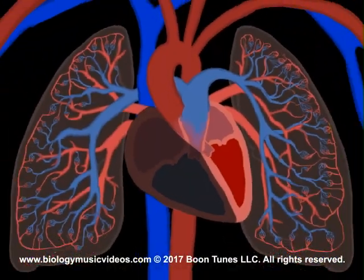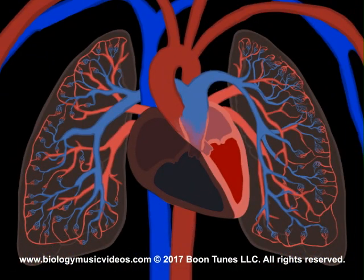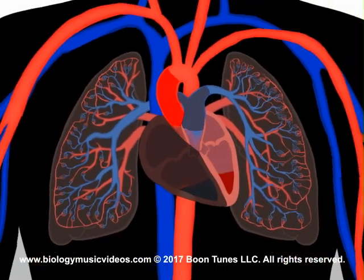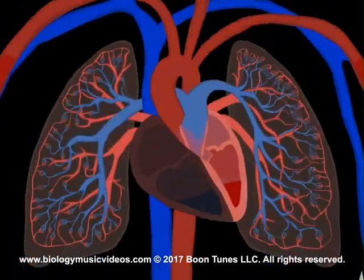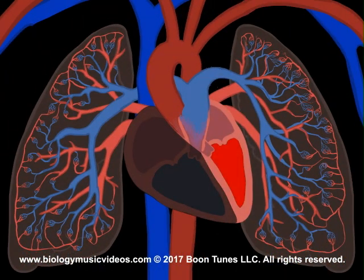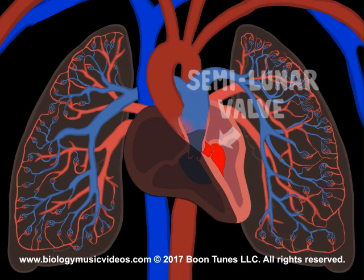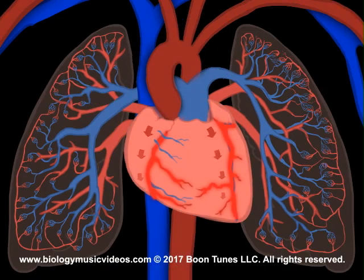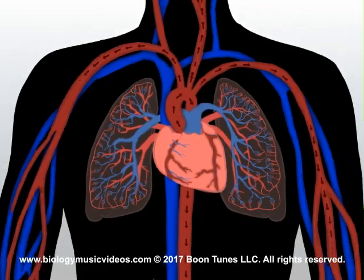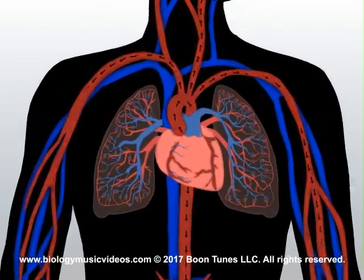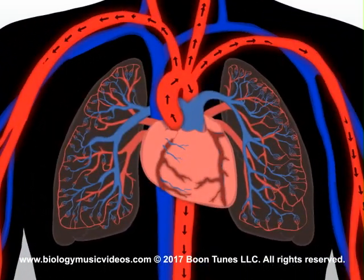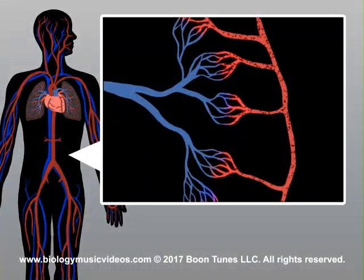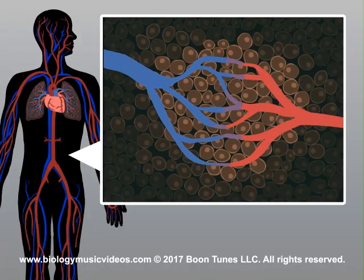The systemic circulation starts in the left ventricle of the heart. As blood leaves the ventricle, it flows through the semilunar valve which opens to the aorta, whose arterial tree feeds the heart itself and then the body. The blood flows through the arteries, then arterioles, then capillaries, which lie close to cell membranes.